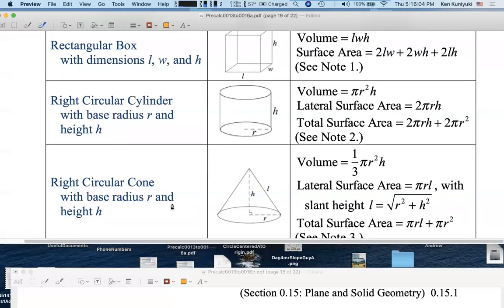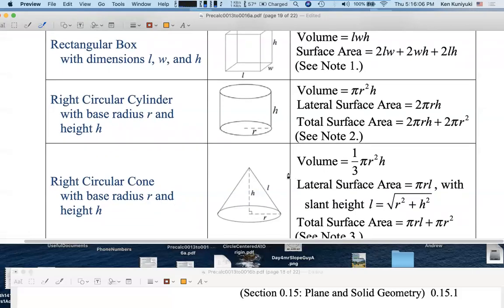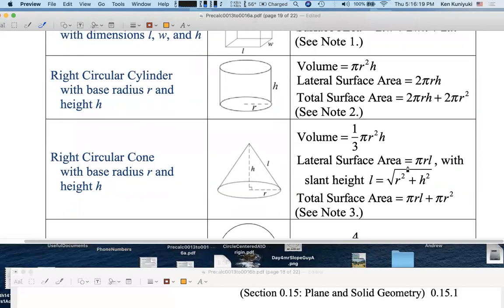For right circular cone, know that the volume of this cone is one-third of the cylinder that it fits snugly in, the circumscribing cylinder, and you can prove that using calculus. However, I will not expect you to know the surface area formulas for this kind of cone.